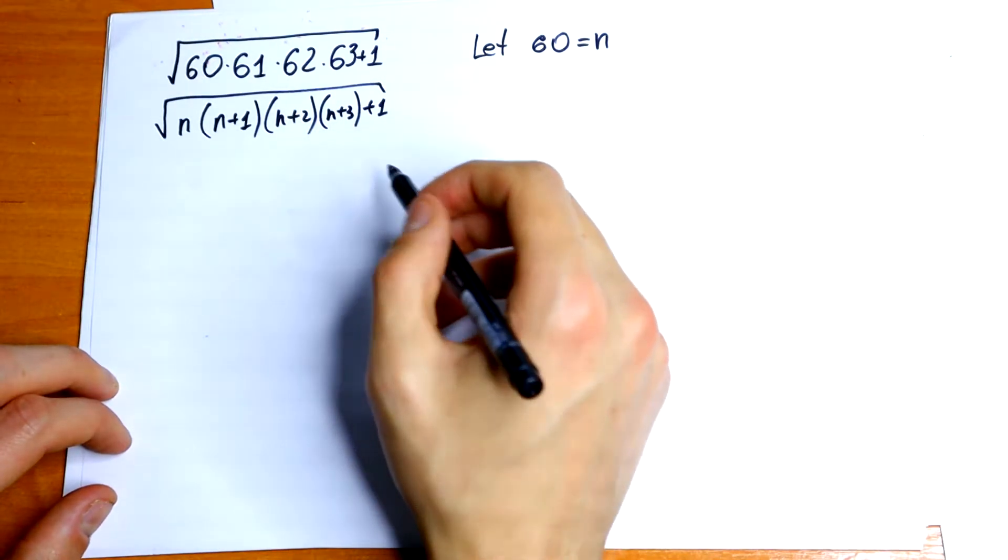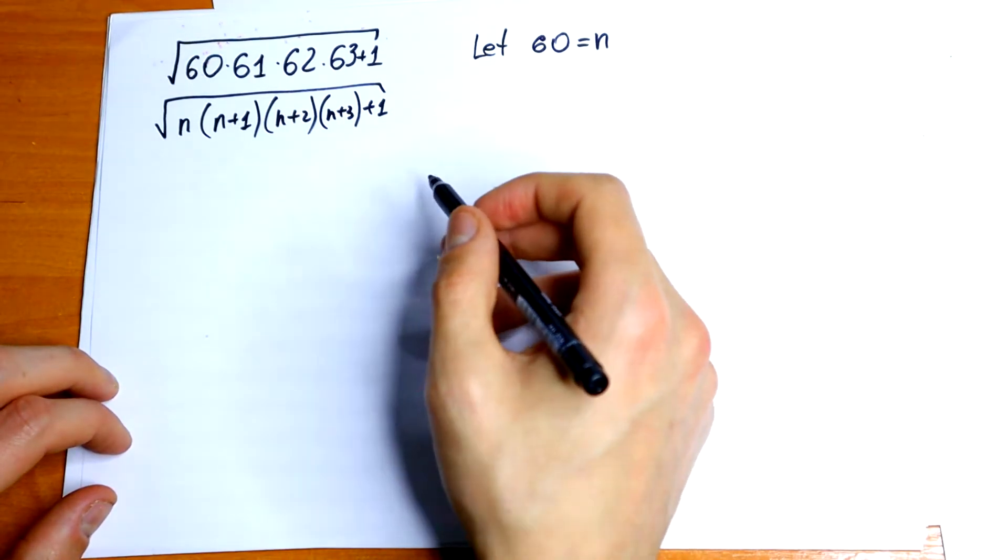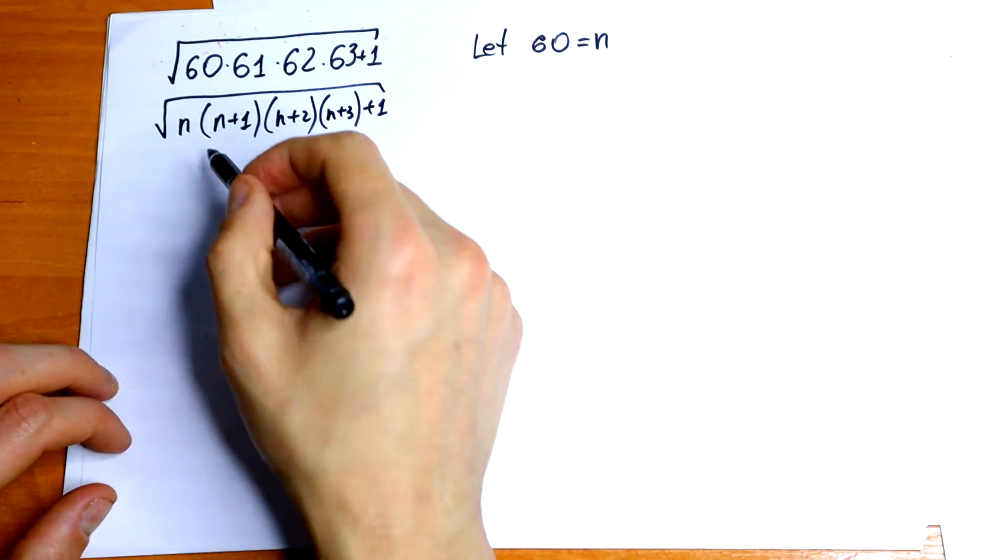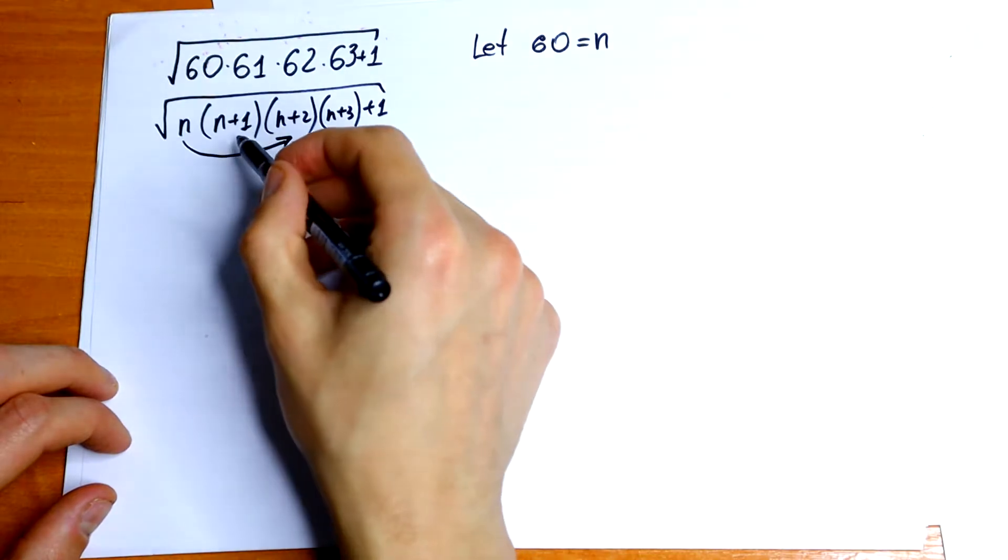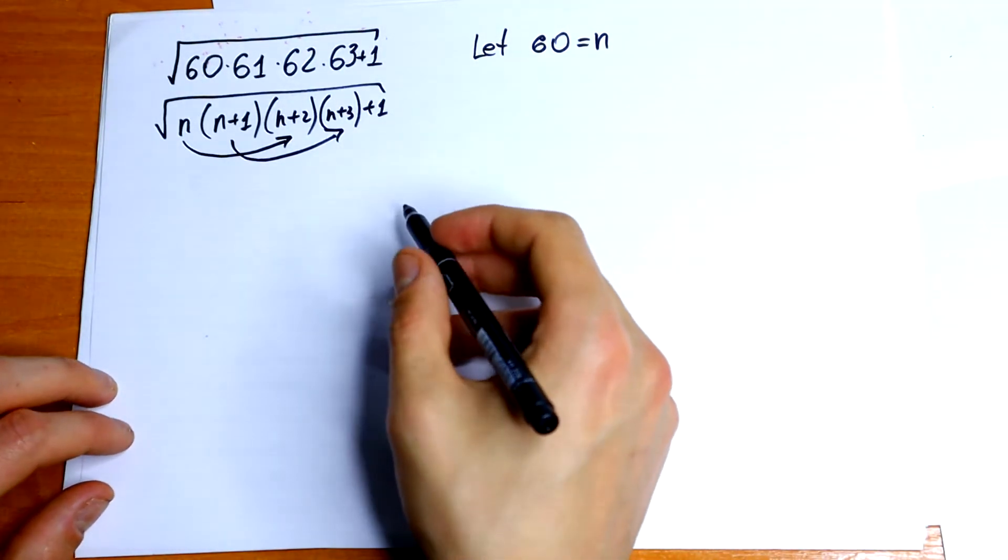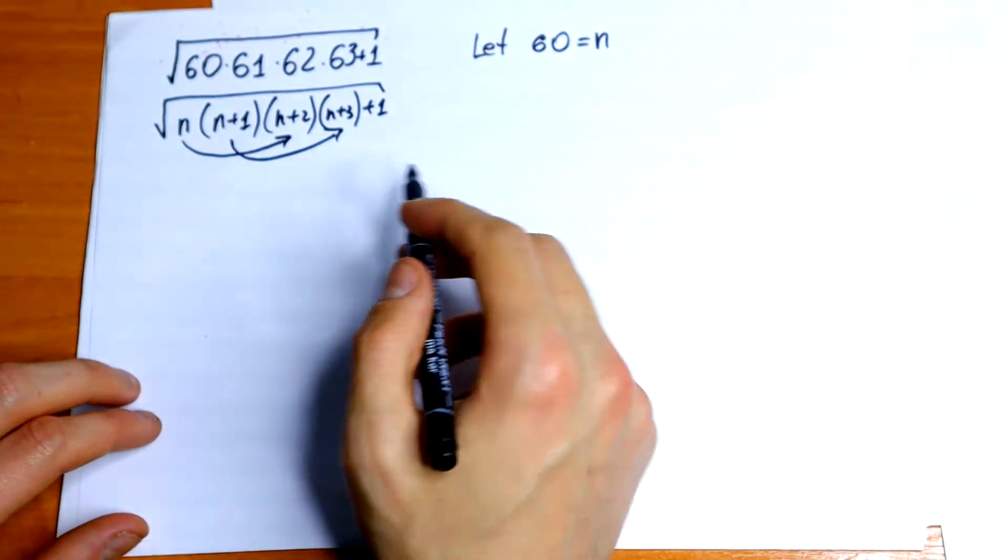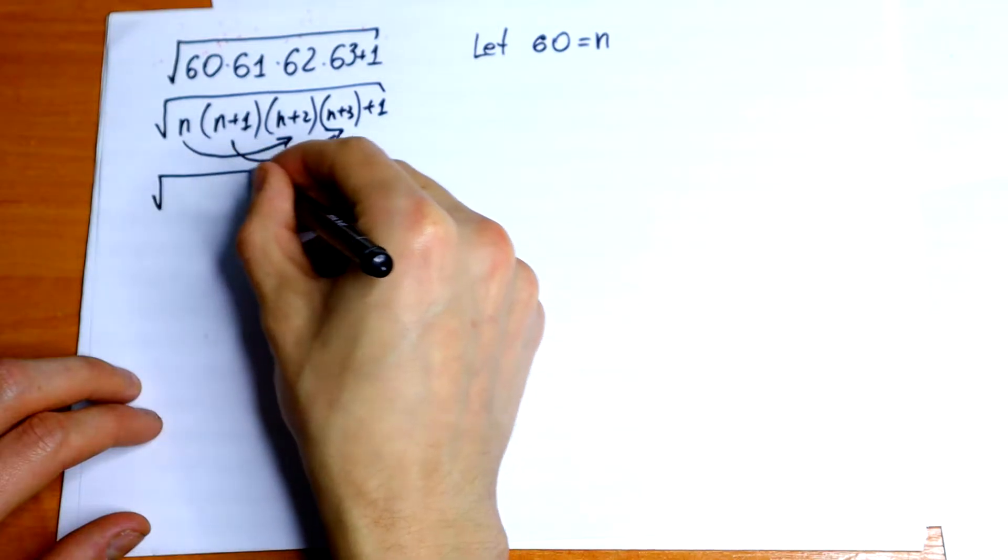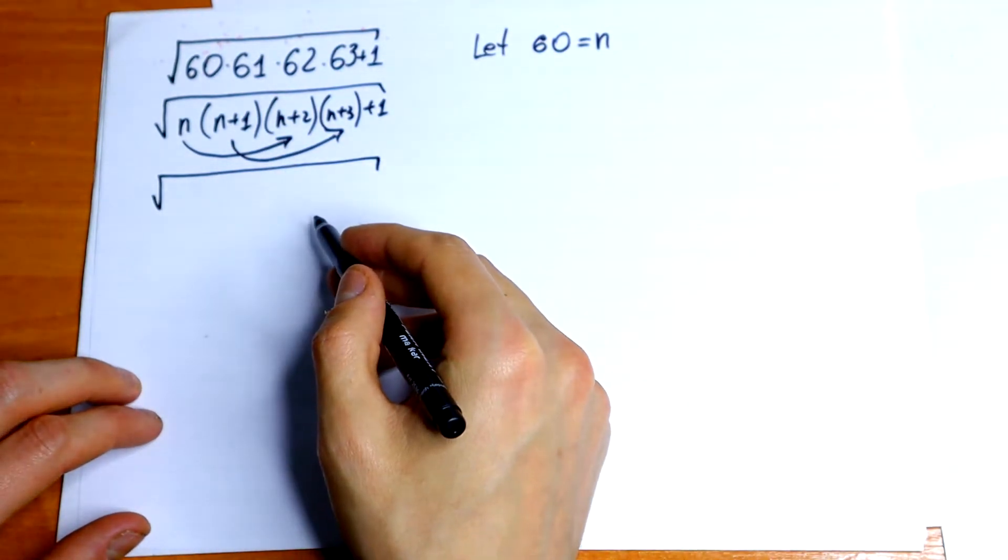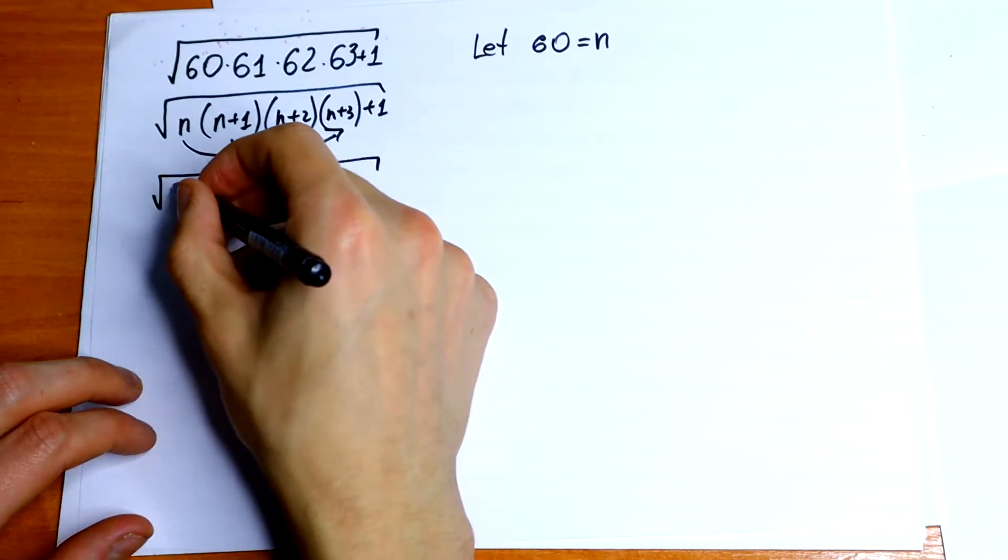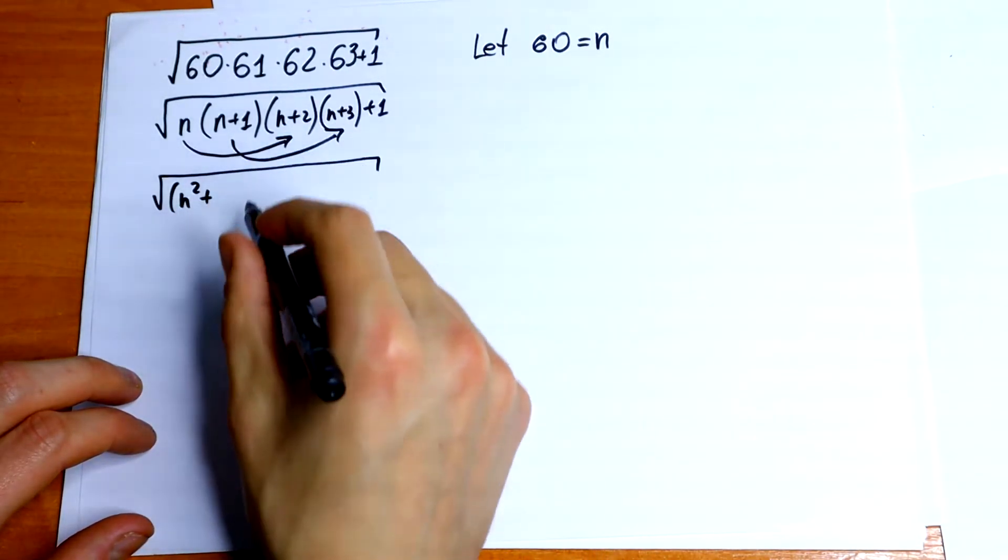Next we're gonna do, so we have a product. This n we can multiply with this n plus 2 and this n plus 1 we can multiply with this n plus 3, because we don't need an order if we have a product. So let's multiply this n to this n plus 2. We will get n square plus 3n.